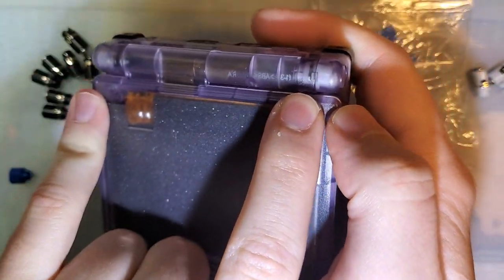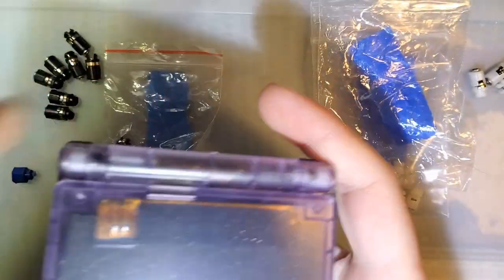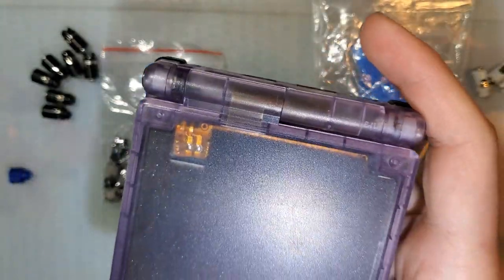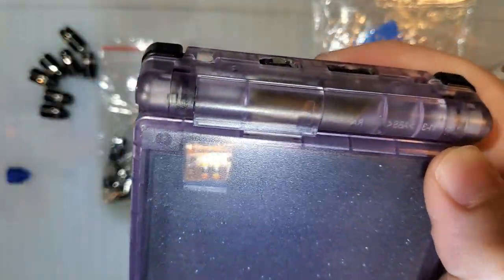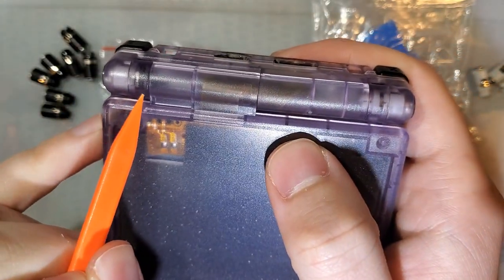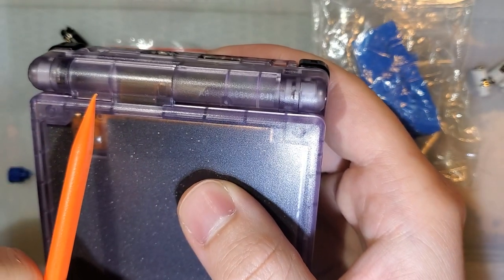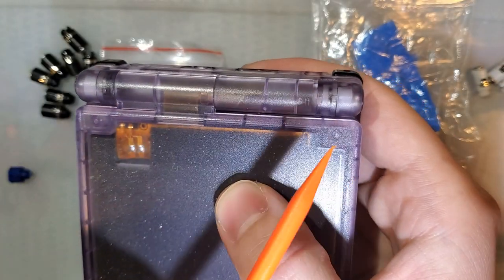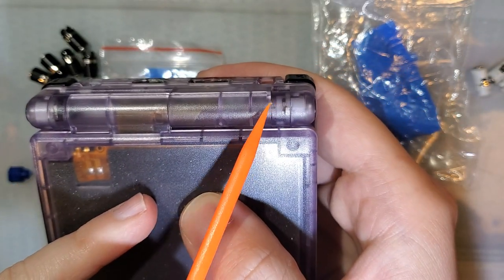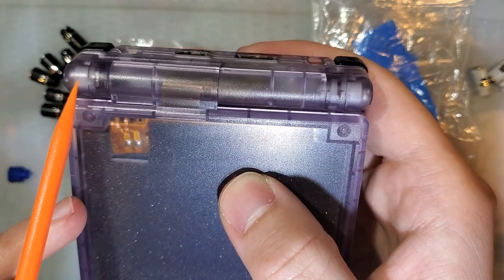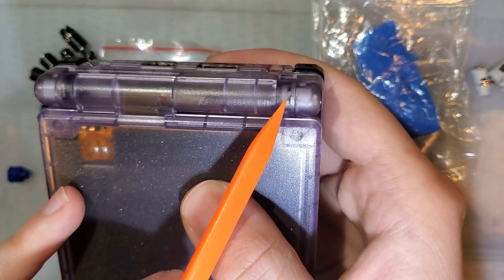Now if your SP doesn't do that, there could be a pretty simple issue. I grabbed this clear shell to show you - if you can see here through the plastic, on the left hand side we have this little black piece and on the right hand side we have this little white piece. That's because the hinges on the SP are two different hinges - there's a left hinge and a right hinge. The left hinge tends to have a black piece in it whereas the right hinge tends to have a white piece.